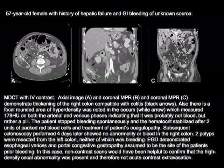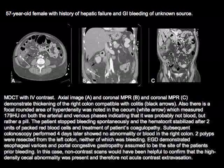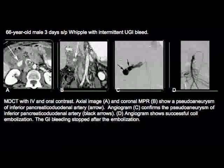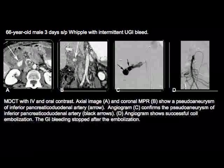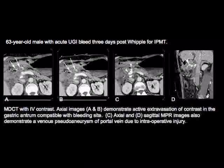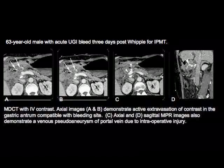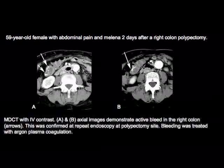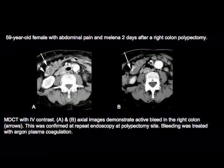It turns out to be a pill in the colon — a true bleed changes density from arterial to venous phase, which is why performing a non-contrast scan first can help. Another case: a patient post-Whipple procedure with a pseudoaneurysm of the inferior pancreaticoduodenal artery, nicely shown on CT angiography and confirmed at angiography with embolization performed. Another post-Whipple case shows very bright areas of active extravasation standing out against water in the bowel.